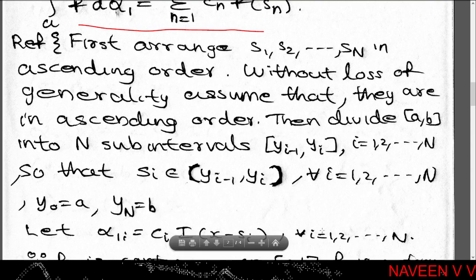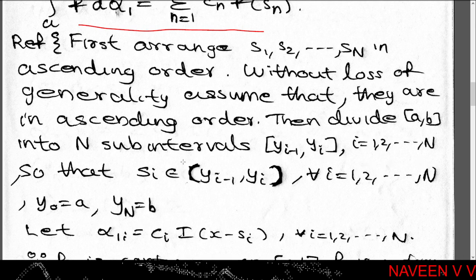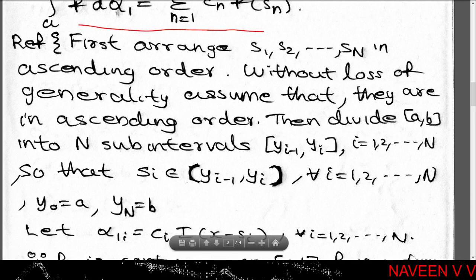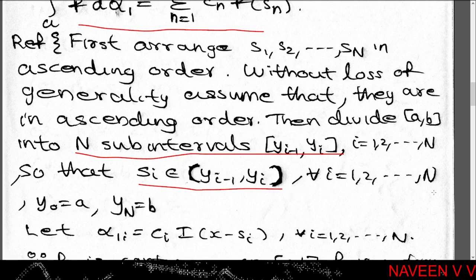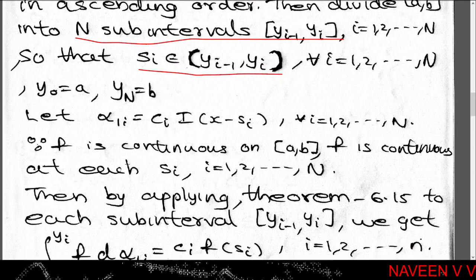Arrange s₁, s₂, ..., sN in ascending order, denoting them s₁', s₂', ..., sN'. Assume this finite sequence is in ascending order. Then divide the closed interval [a,b] into N subintervals [y₀, y₁], [y₁, y₂], ..., [y_{N-1}, yN], where y₀ = a and yN = b, so that sᵢ belongs to the open interval (y_{i-1}, yᵢ) for all i = 1, 2, ..., N.